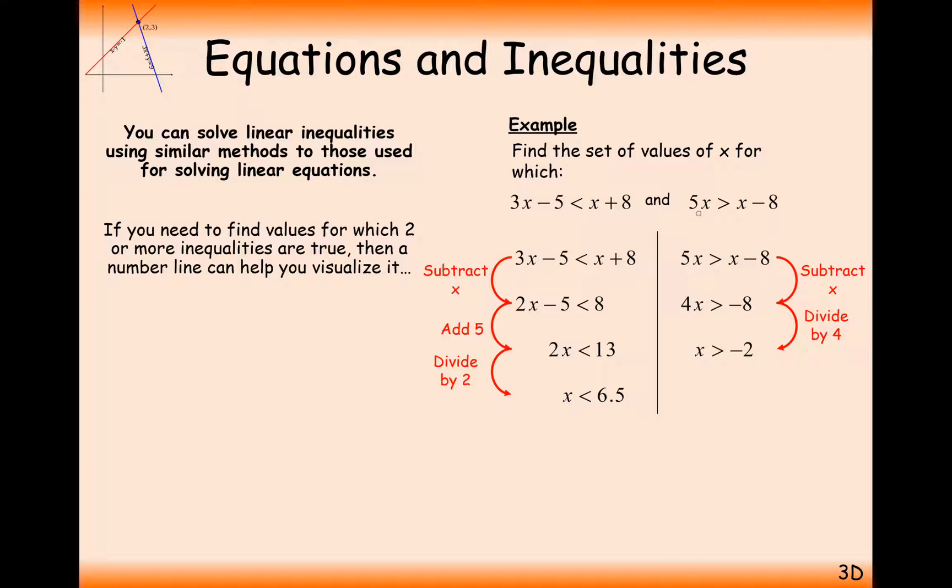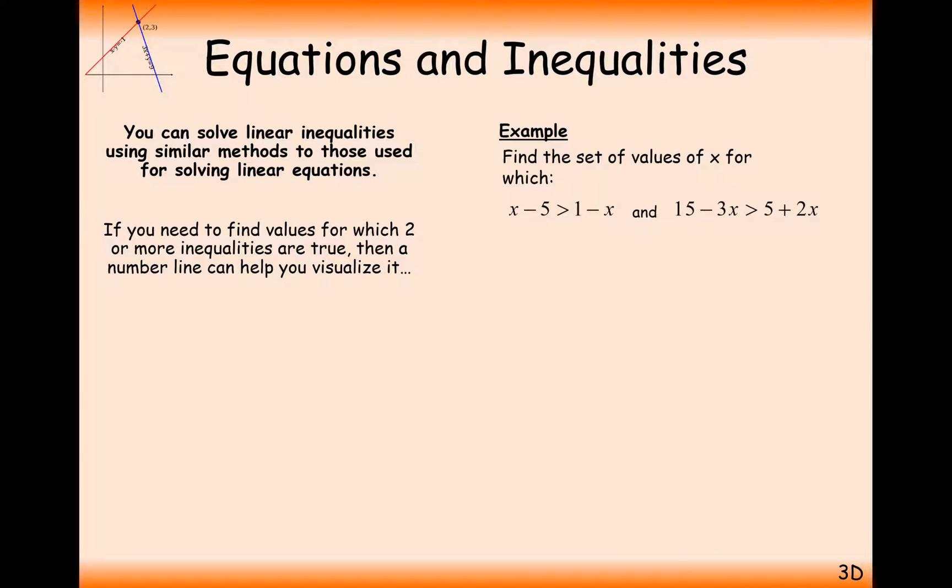If we want the values of x to satisfy both of these equations, let's think about it on a number line. What we need for the first solution here is for our number to be less than 6.5. And for the second solution here, we need it to be bigger than minus 2. The region of values that satisfy both of those inequalities, where they both have a line through them, is in between minus 2 up to x and up to 6.5. So our x value has to be in between minus 2 and 6.5. For example, 1. Let's try putting 1 in. We're going to get minus 2 is less than 9, and we're going to get 5 is bigger than minus 7, which works.